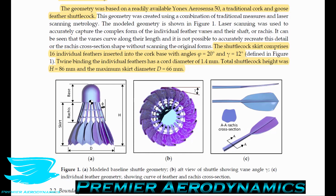The feathers are angled at 20 degrees as they come out of the cork — so they're wedged out about 20 degrees from the parallel line. They are also rotated about their axes by 12 degrees. There is twine binding the individual feathers with a 1.4 millimeter diameter, running around the vein sections in two bands to hold all the feathers in place. The total shuttlecock height was 86 millimeters with a maximum skirt diameter of 66 millimeters.